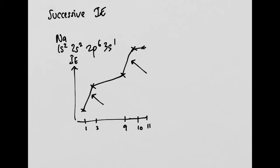You can remove electrons one by one until there are none left. For sodium, which has 11 electrons, you can remove all 11. Take note: there is a big jump from removing the first to the second electron. Why? Because after removing the first electron from the outer shell, the next electron is in principal quantum shell 2, which is much closer to the nucleus, so it has a greater nuclear attraction and is much harder to remove.